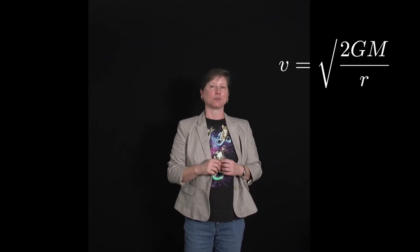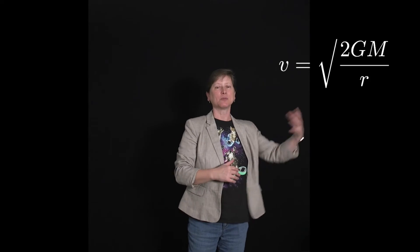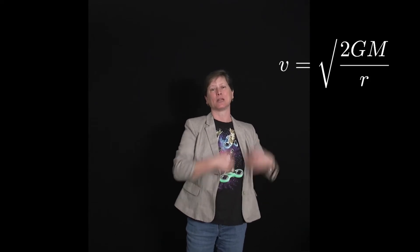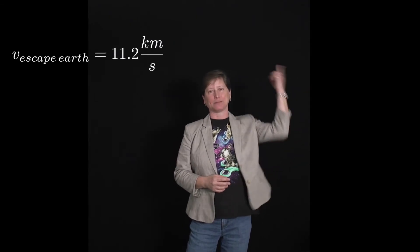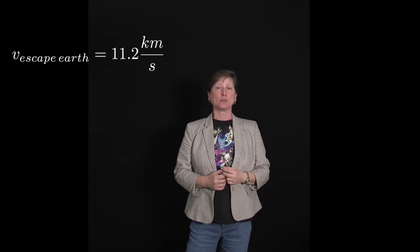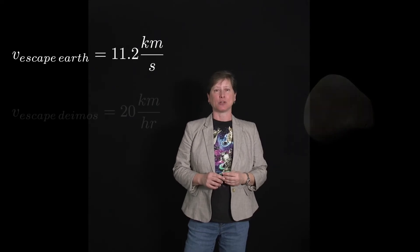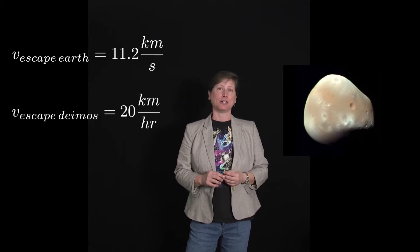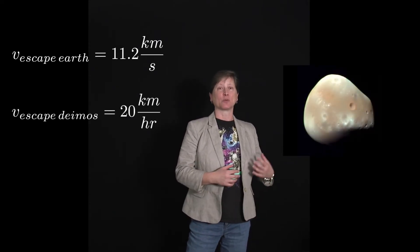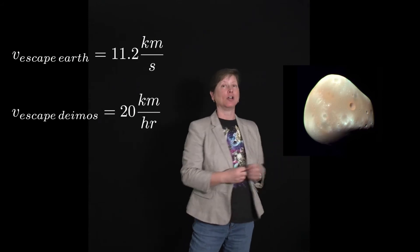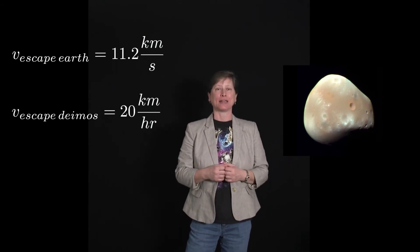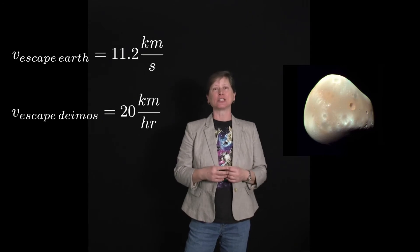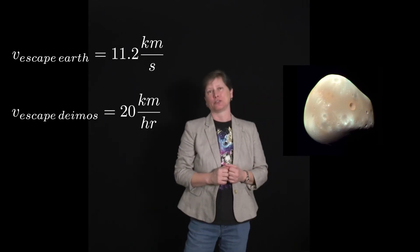Every object with mass has a minimum speed that you must go to be able to escape its gravitational field. For Earth, that's about 11.2 kilometers per second up. It's considerably easier to escape the Martian moon Deimos because its mass is so small. In fact, 20 kilometers per hour would get you off the surface of Deimos, which means if you had a ramp and some really grippy tires, you could literally jump a bicycle off that moon.